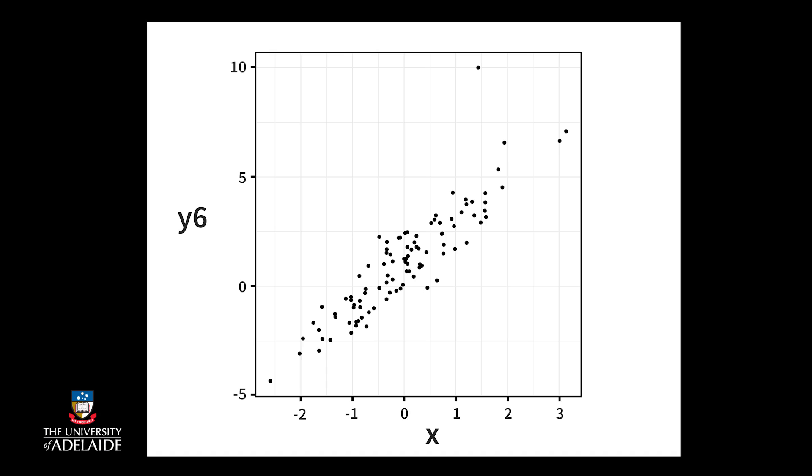A final thing to consider is whether there is any point that sticks out, what we call an outlier. In the next section, we'll show how these can be identified with a box plot, but in scatter plots, it's a bit of a judgment call. In this scatter plot, there's a point at 1.5, 10 that sticks out.